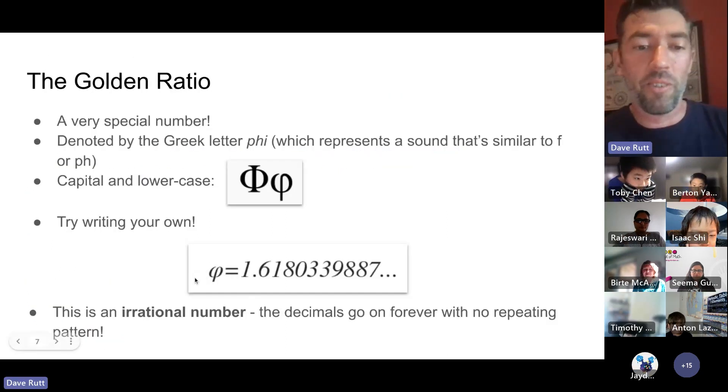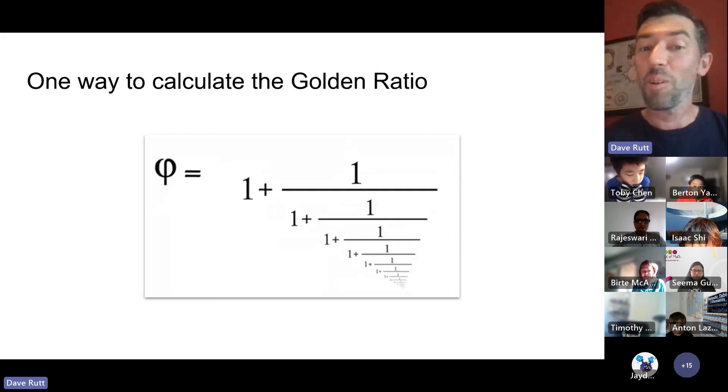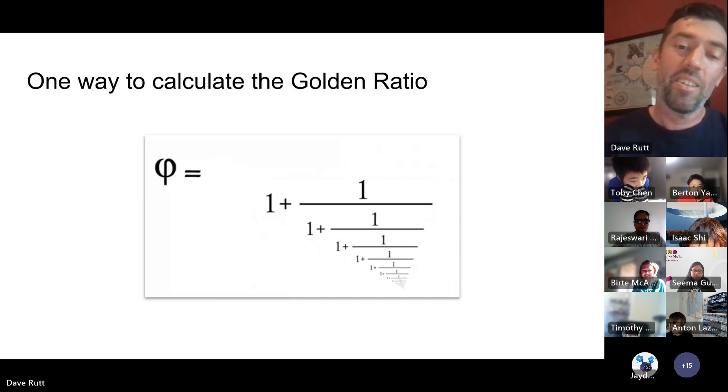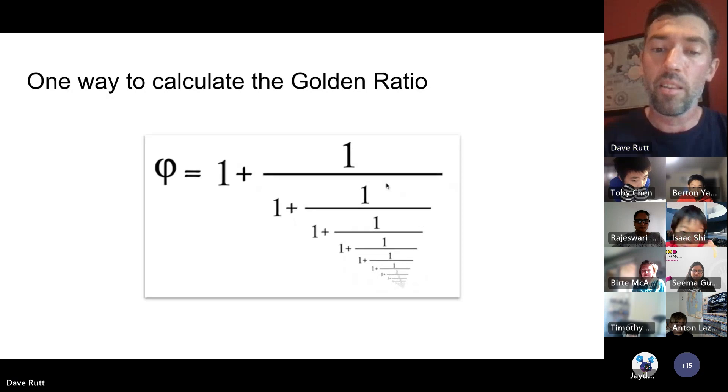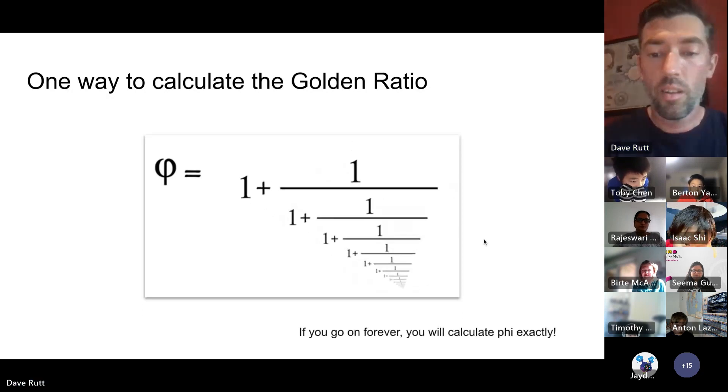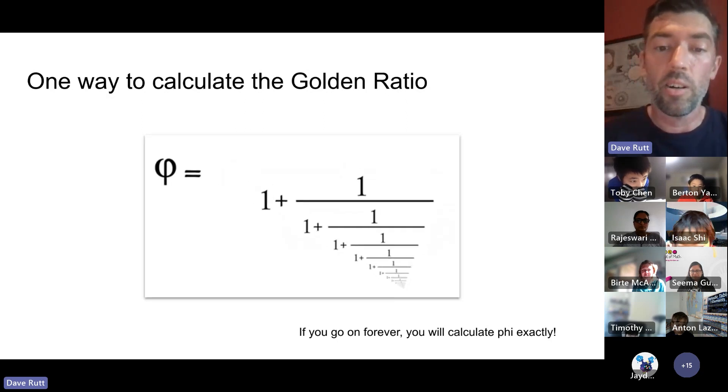This is probably one of the top five most famous irrational numbers, the golden ratio represented by phi. Now this probably looks pretty confusing because it's moving and animated, but some of you may recognize this type of mathematical calculation. It's called a continued fraction. And in the spirit of math, you do study continued fractions now.